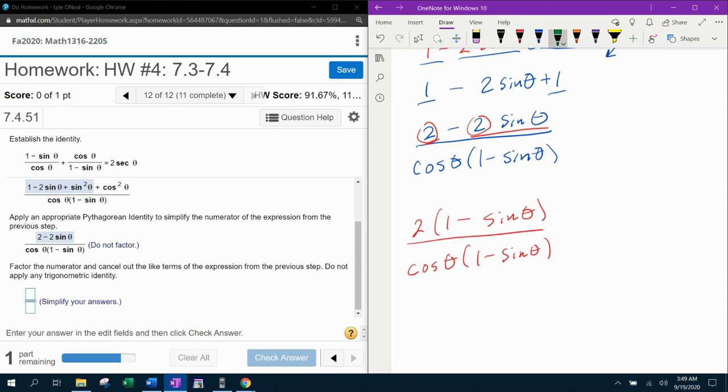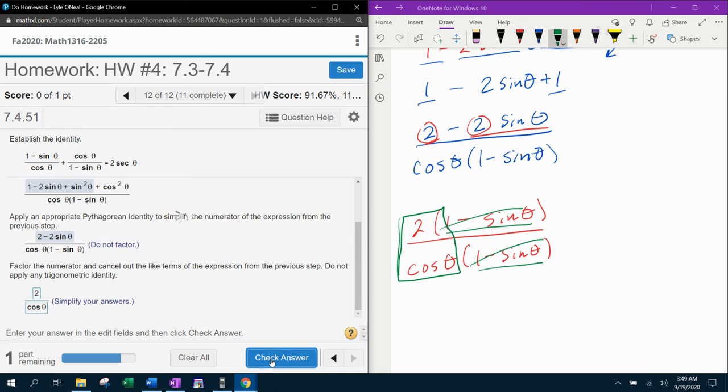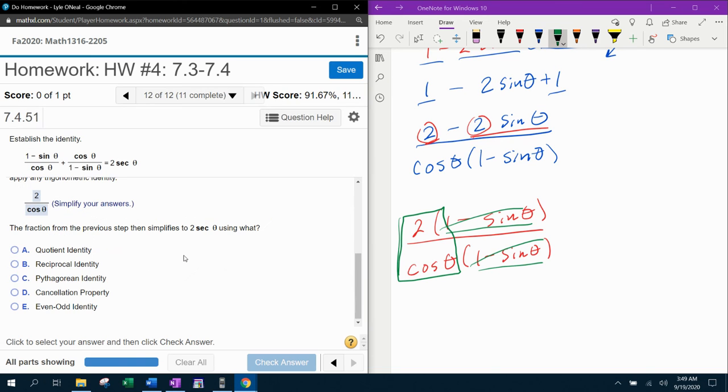And now do you see that I've got like factors one minus sine theta, one minus sine theta. Those will cancel and leave me two over cosine theta. So the top box is two, and the bottom box should be cosine theta.